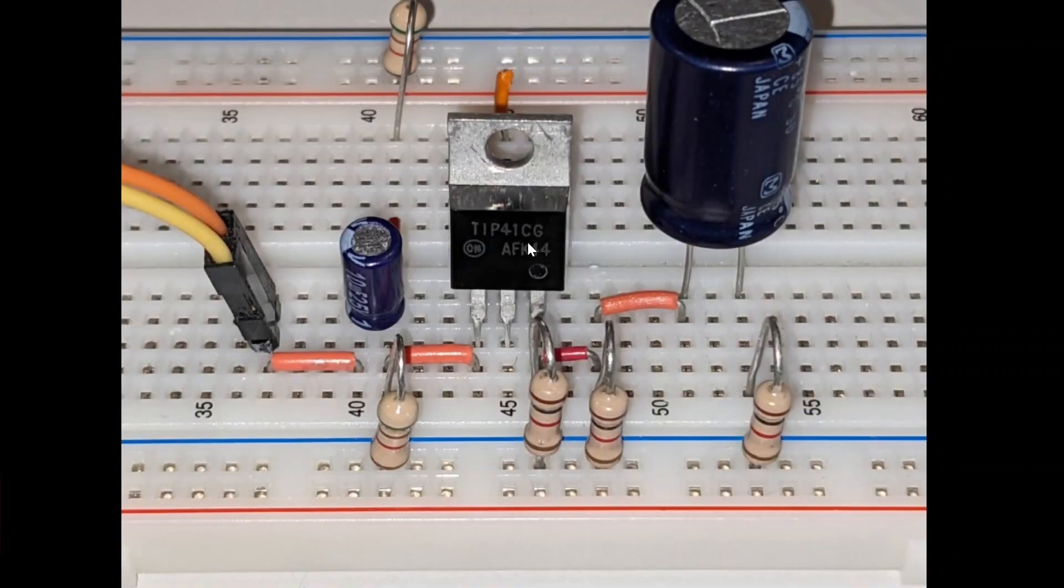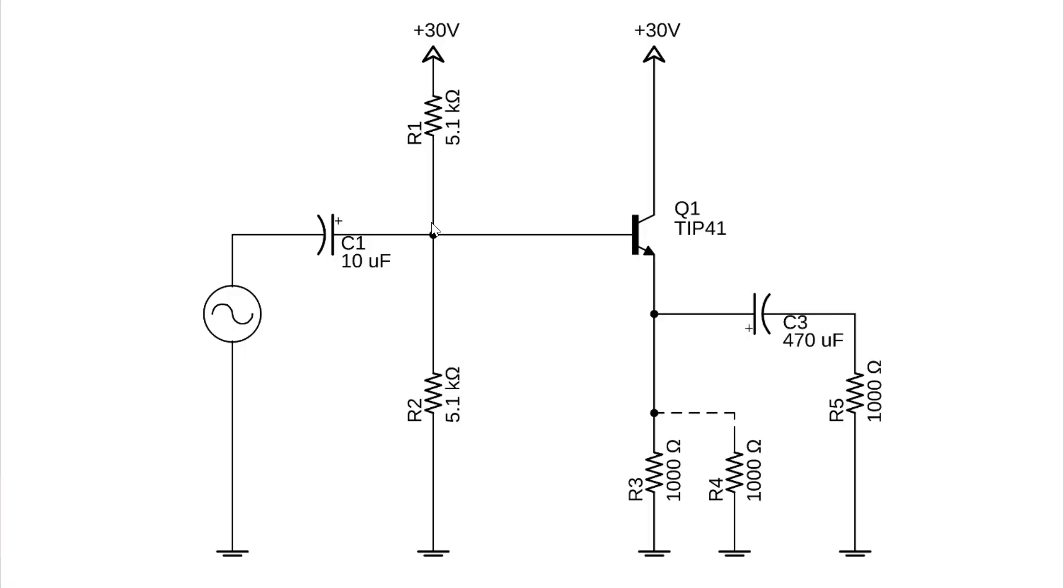This is the freestanding emitter follower featuring a TIP41 transistor. This is the schematic. You'll notice that the signal generator is capacitively coupled on the input and the load resistor is capacitively coupled as well.